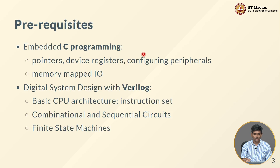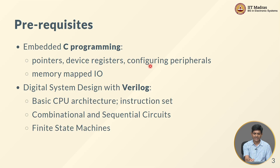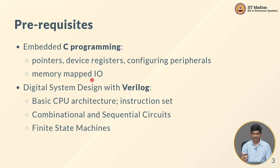The prerequisites for this course primarily consist of two courses: the Embedded C Programming course and the Digital System Design course. In Embedded C, we looked at various concepts primarily involving pointers, device registers, and how to configure different peripherals. We also introduced the notion of memory-mapped IO and how the overall address space corresponding to a processor can be divided into different segments used for either memory or custom peripherals.